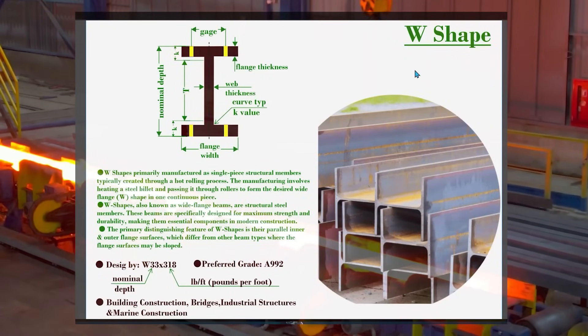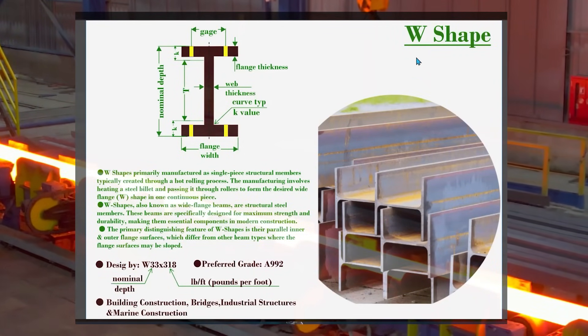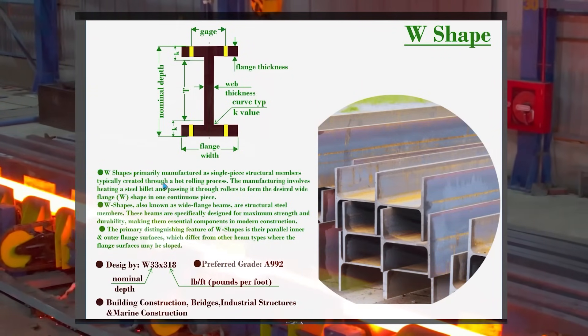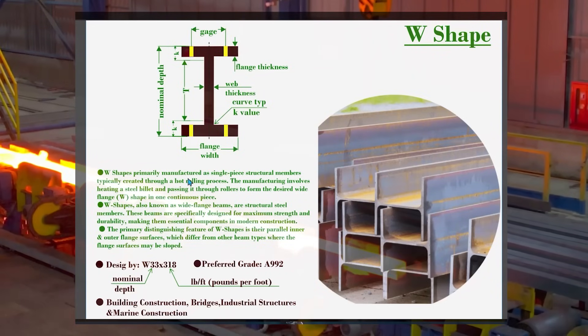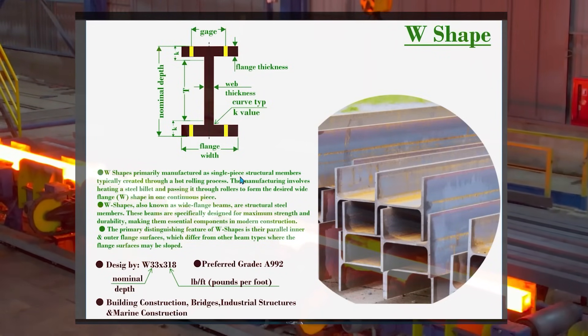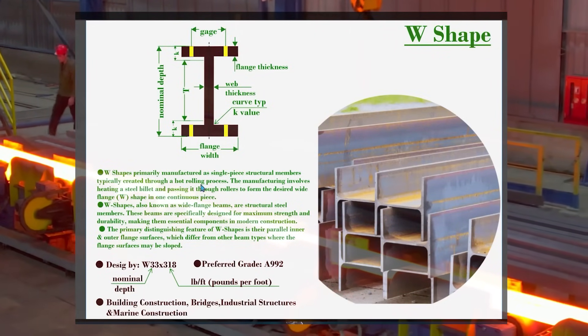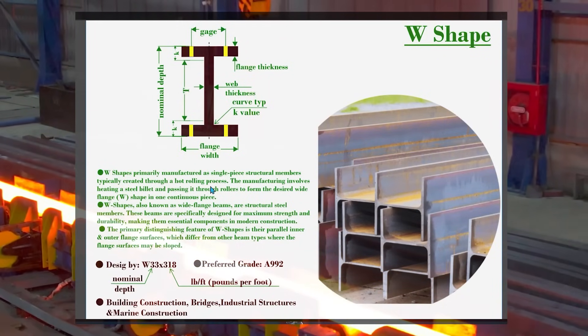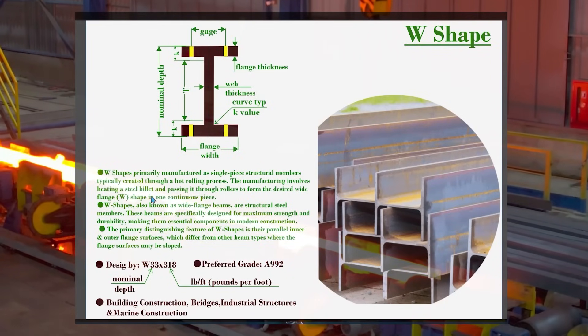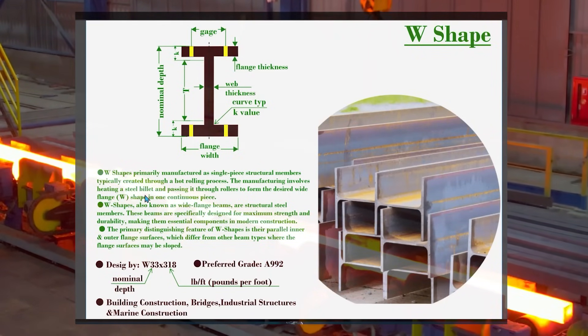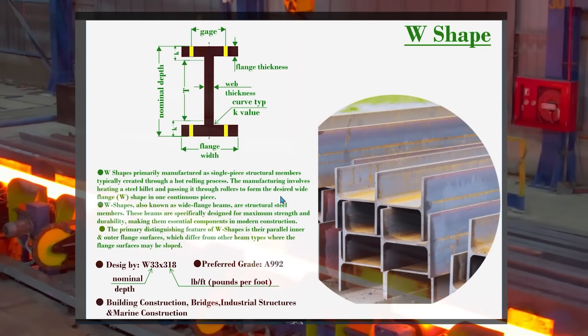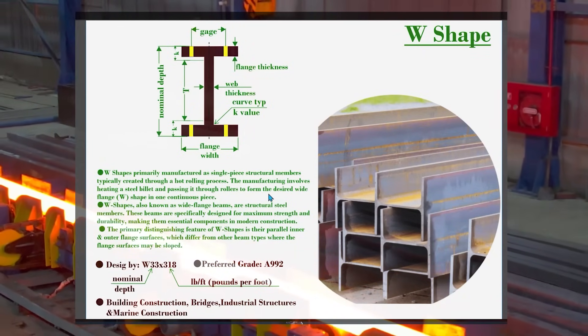Hello everyone, I welcome you all. Today in this video we will see about the W shapes. These W shapes are manufactured as a single piece created through a hot rolling process. In the hot rolling process, a steel billet is heated and passed through rollers to form the desired shape.